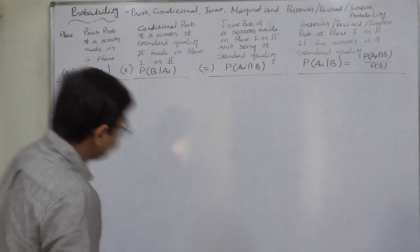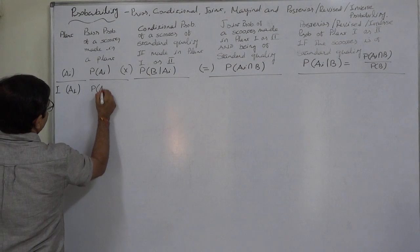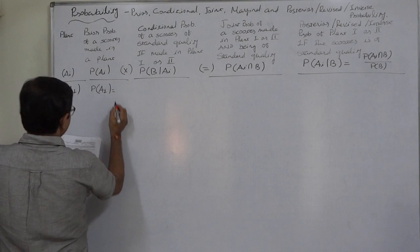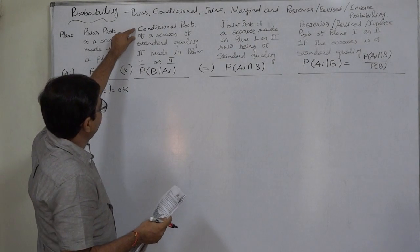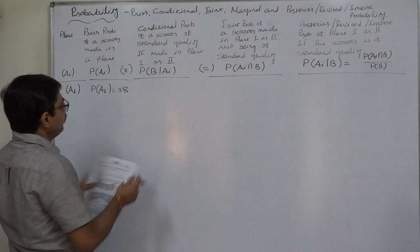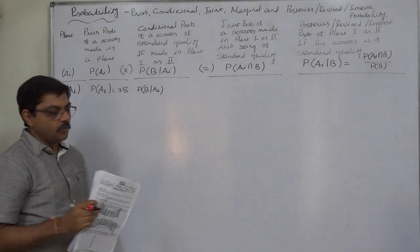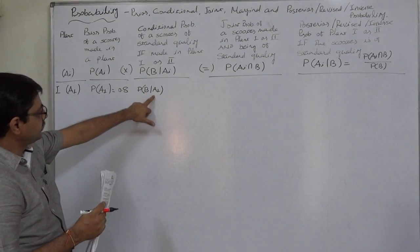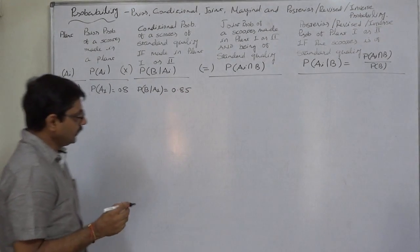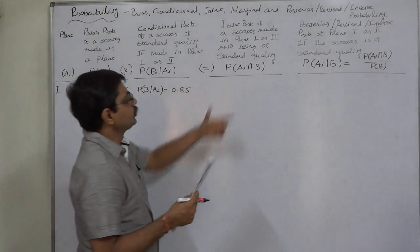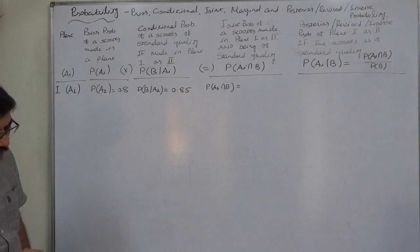The cause events are the two plants. Let plant one be A1. Probability of A1 is 0.8, since 80% of scooters are manufactured at plant one. The conditional probability of a scooter being of standard quality given it was made at plant one — P(B|A1), where B stands for standard quality — is 0.85. Multiplying these two gives the joint probability P(A1 ∩ B), which comes to 0.68.